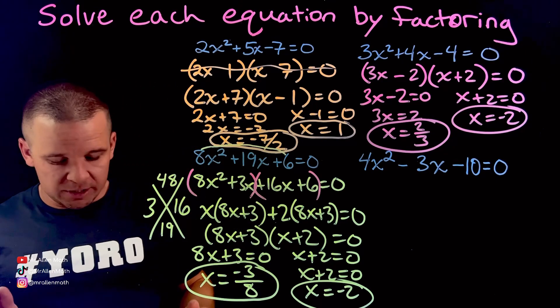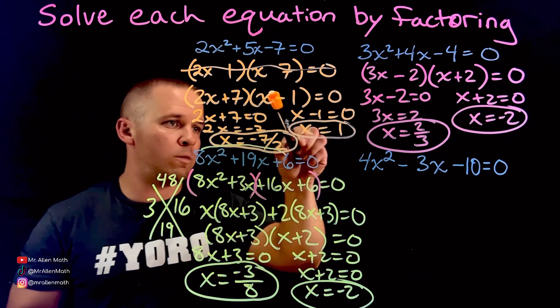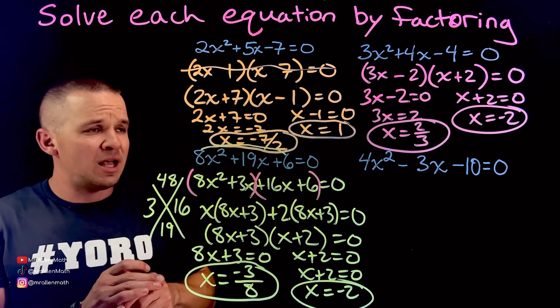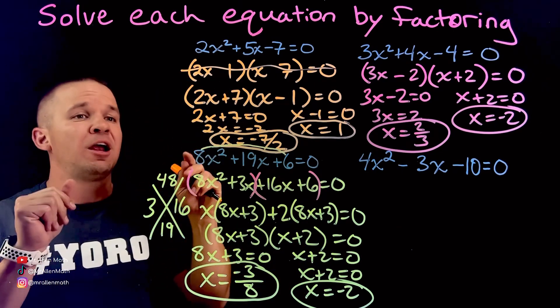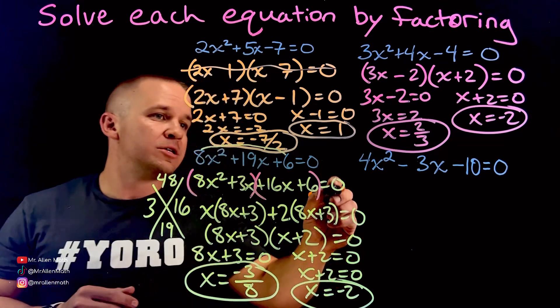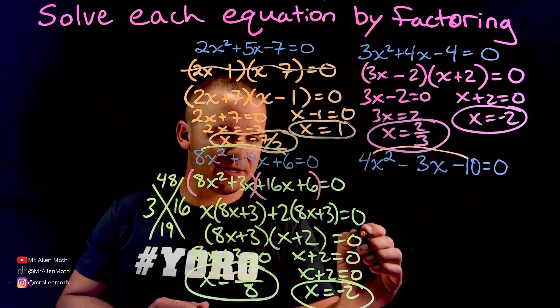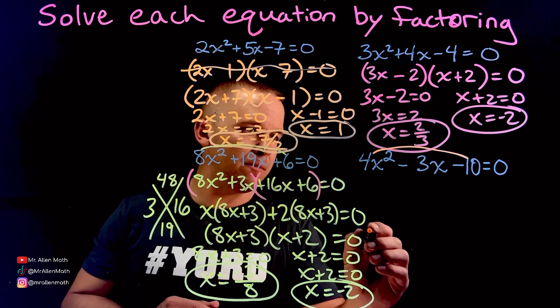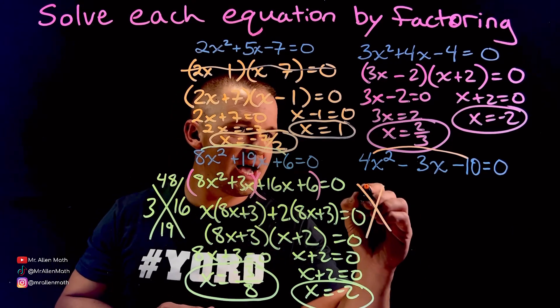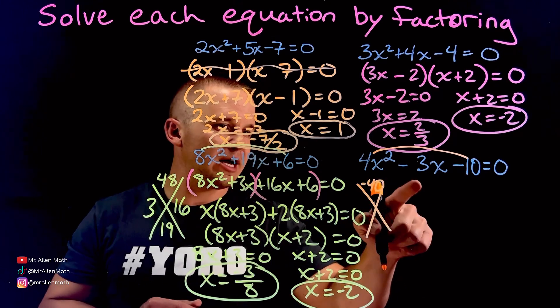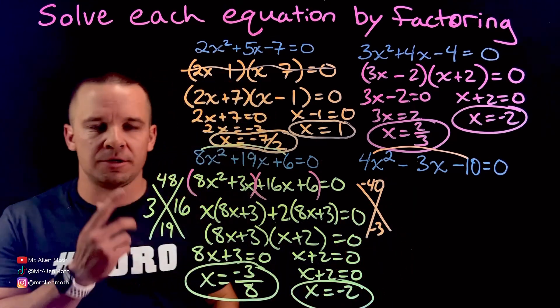Last one here, dogs. I'm going to go back to orange here in the corner. Once again, going to do a little rainbow method. So here I got 4 times negative 10. I got a little x here. I'm running out of room, but you know, I think we'll be all right. So we got negative 40. And I got to add the negative 3. What two numbers are going to do that?